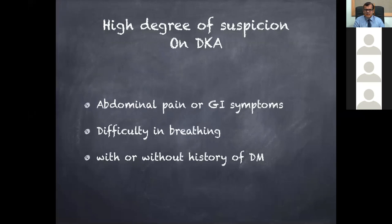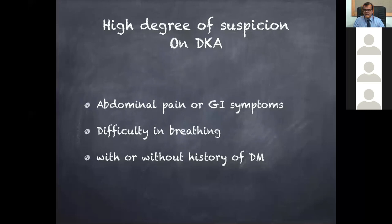We must maintain a high degree of suspicion. Many patients with DKA are misdiagnosed — managed as acute abdomen and sent to surgical wards, or given repetitive nebulizations for shortness of breath. Remember: if a patient is significantly short of breath but lung signs are normal, think DKA. Similarly, abdominal pain with a soft abdomen should always prompt the question — is this diabetic ketoacidosis?